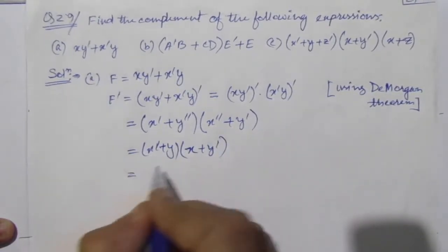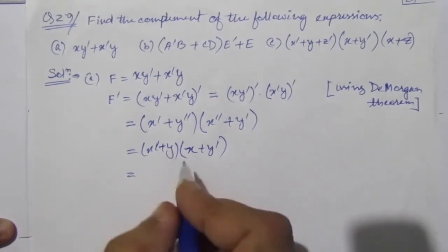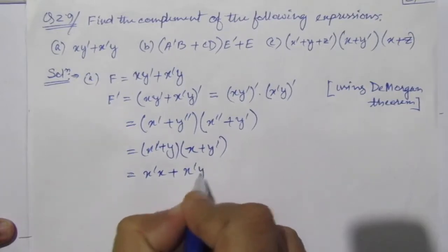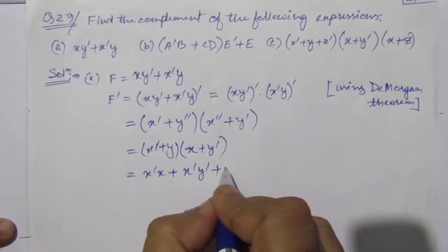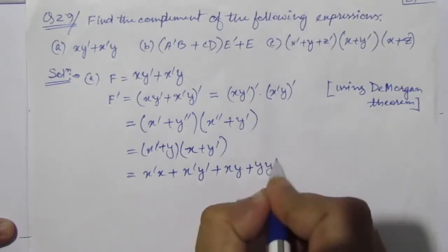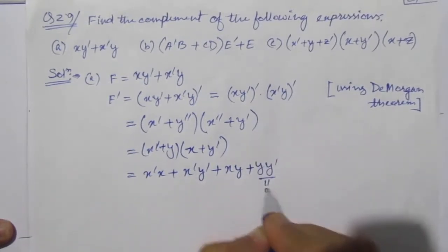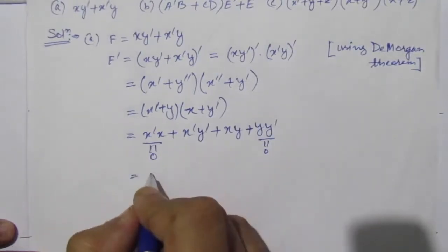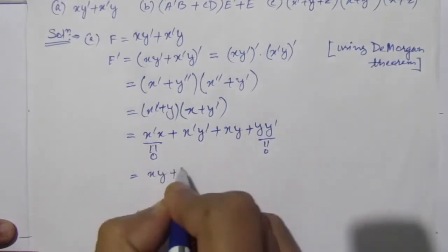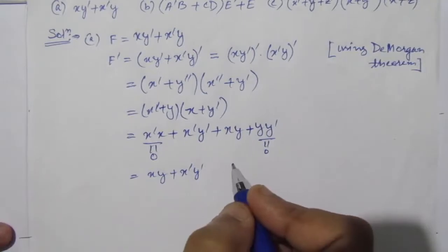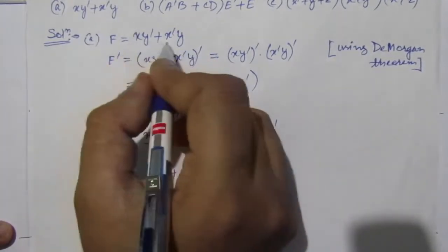Now multiply these two expressions: x̅x plus x̅y̅ plus xy plus yy̅. The terms x̅x and yy̅ are both zero, since a variable ANDed with its complement is always zero. So from here, we can write the result as xy plus x̅y̅. This is the complement of the first function.